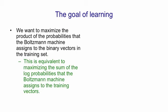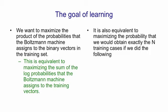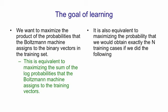This is equivalent to maximizing the sum of the log probabilities that the Boltzmann machine assigns to the training vectors. It's also equivalent to maximizing the probability that we'd obtain exactly the n training cases if we ran the Boltzmann machine in the following way.